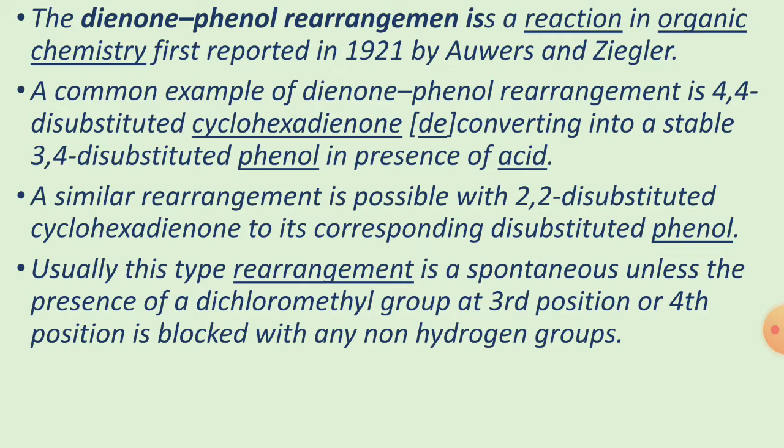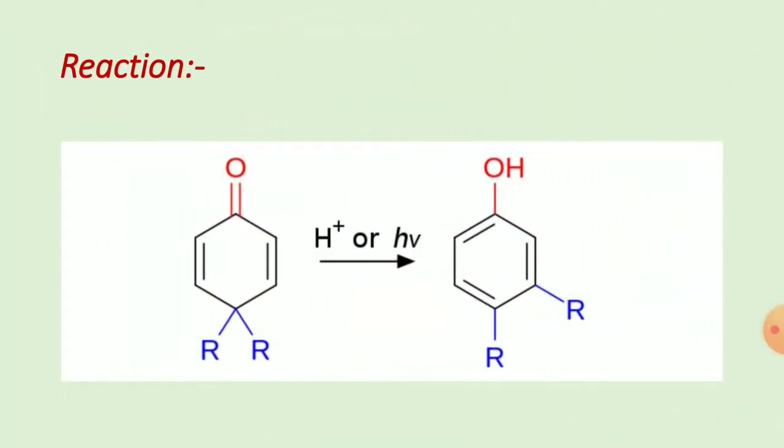Similarly, the 2,2-disubstituted cyclohexadienone can rearrange to the disubstituted phenol. Usually this type of rearrangement is spontaneous unless the third or fourth position is blocked with any non-hydrogen groups such as a chloromethyl group.